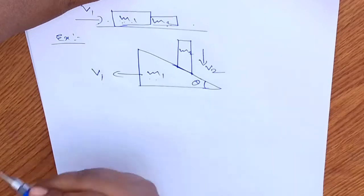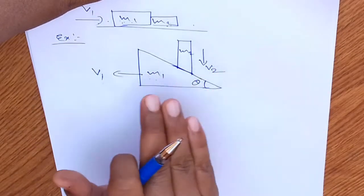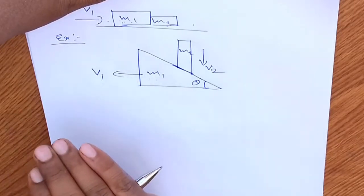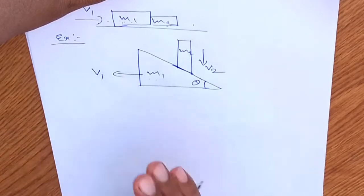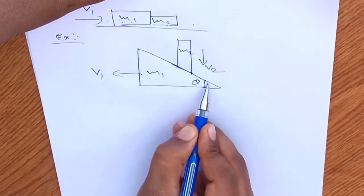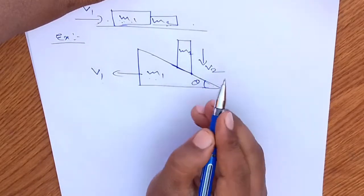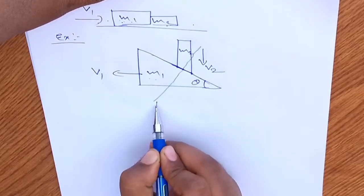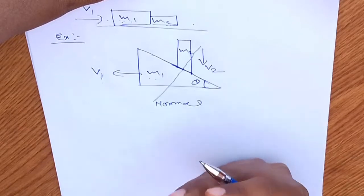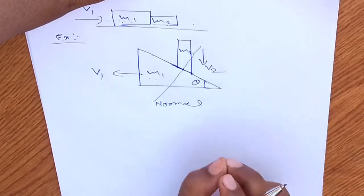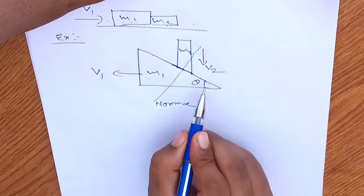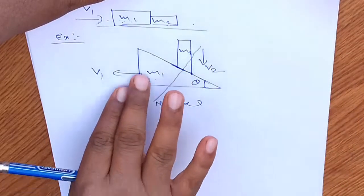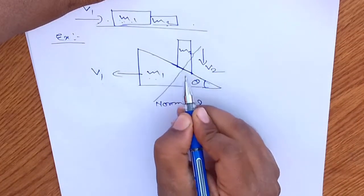Whatever the velocities of the different blocks, what is more important in this constraint is to first identify the common tangent at the point of contact. This is the point of contact, so the common tangent will be in this direction. Once you identify the common tangent, find the common normal — the normal is always perpendicular to the tangent. Then check all the components of the velocities of different blocks along the direction of the normal.